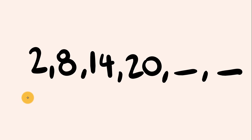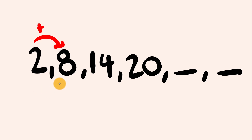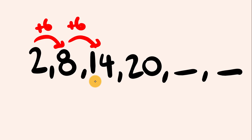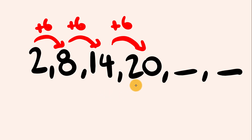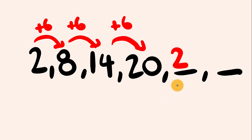So how much are we going up by? From 2 to 8, we've gone up by 6. From 8 to 14, we've also gone up by 6. And from 14 to 20, we've also gone up by 6. So in this arithmetic sequence, we are going up by 6s. 20 plus 6 is 26, and 26 plus 6 is 32.